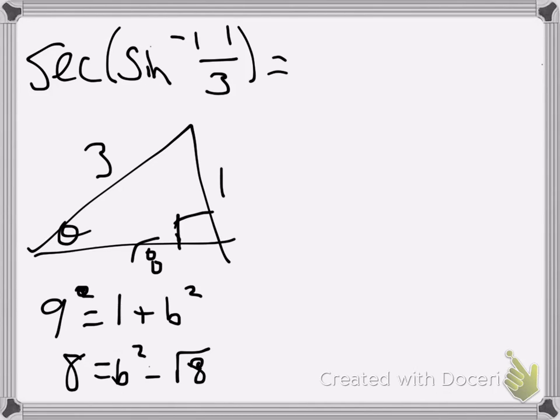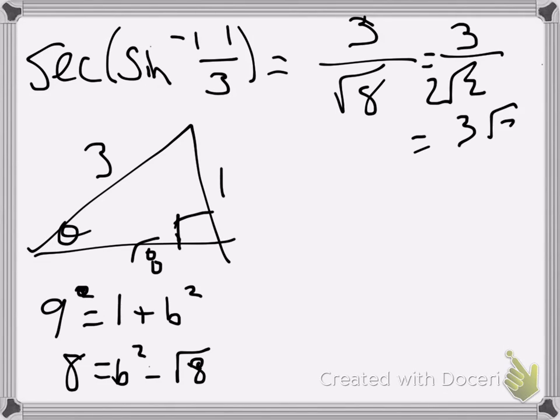Secant is going to be the reciprocal of cosine. So we're going to do the hypotenuse over the adjacent, which will be 3 over root 8, which you can then simplify and rationalize to be 3 root 2 over 4.